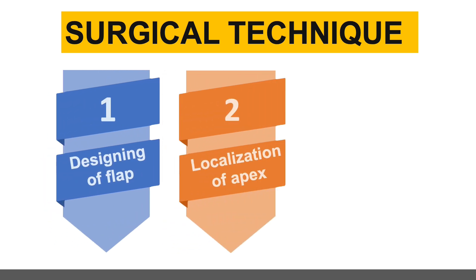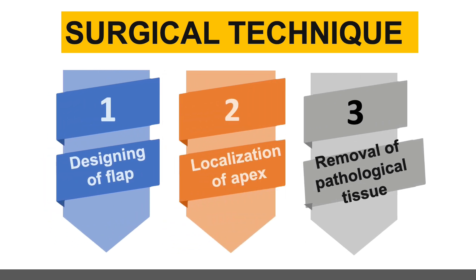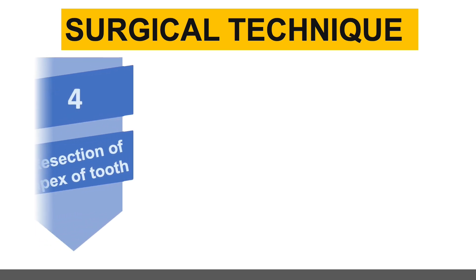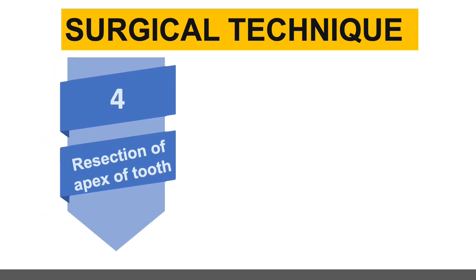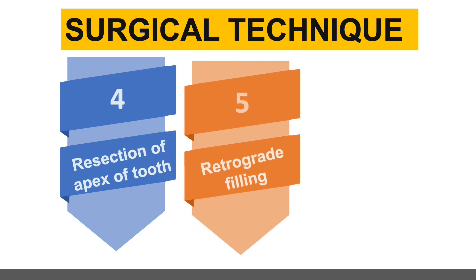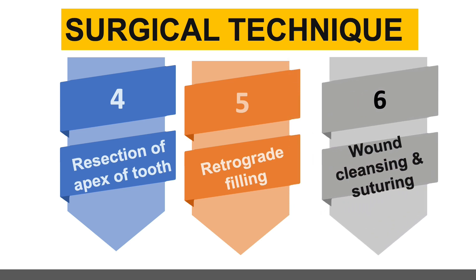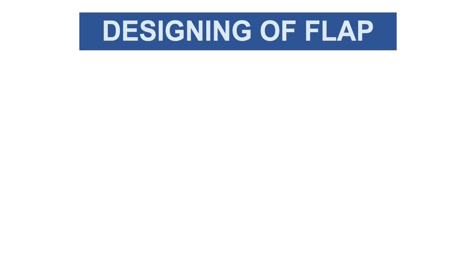The steps in the surgical technique are: first, designing of the flap; second, localization of the apex; third, removal of pathological tissue; fourth, resection of the apex of the tooth; fifth, retrograde filling; and sixth, wound cleaning and suturing.